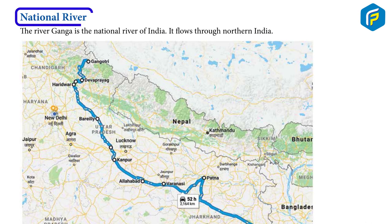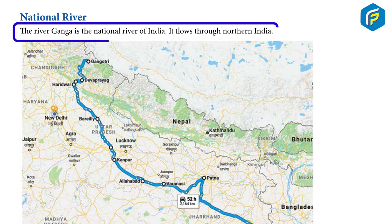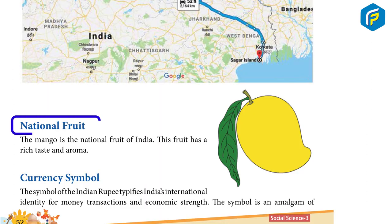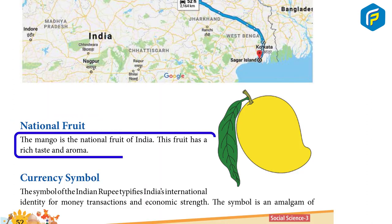National River: The River Ganga is the national river of India. It flows through northern India. National Fruit: The Mango is the national fruit of India. This fruit has a rich taste and aroma.